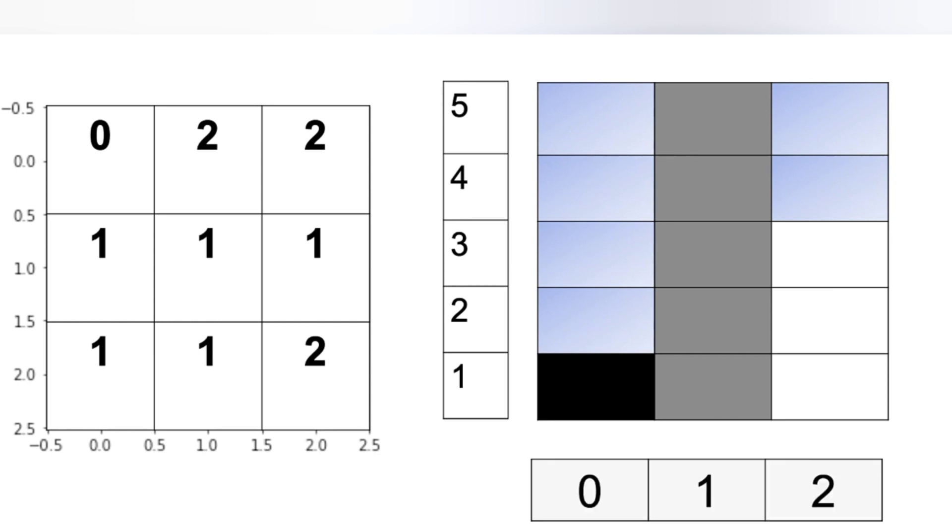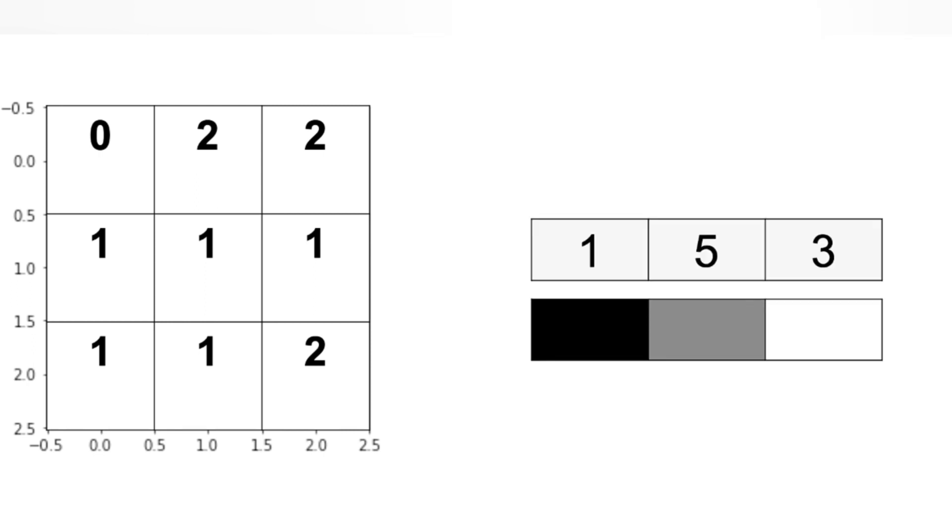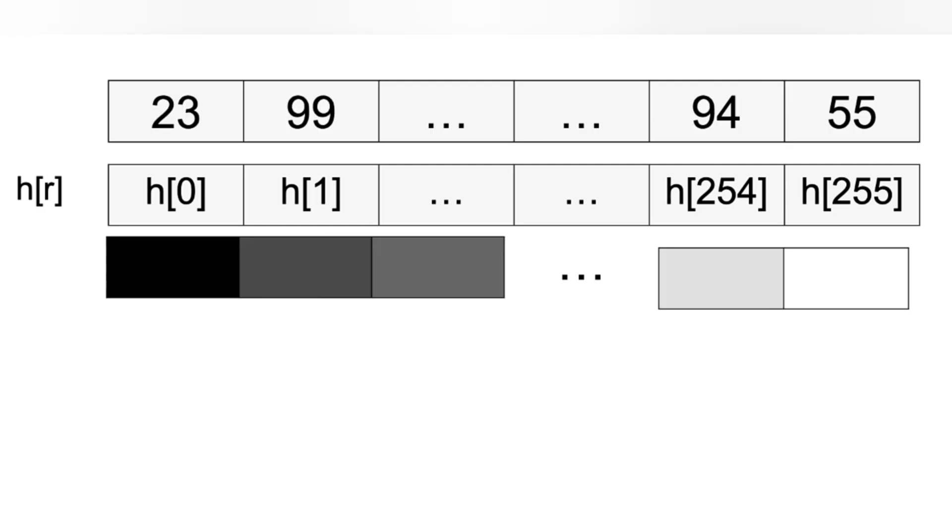The histogram counts the pixel intensities. We represent these intensities as an array. The index of the array is the intensity level, R. In most images, we have 256 levels, representing the count of the different intensity of gray levels.